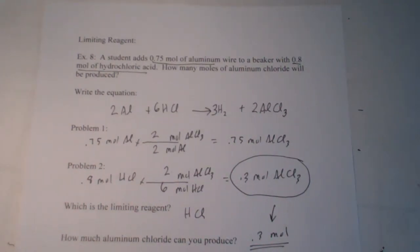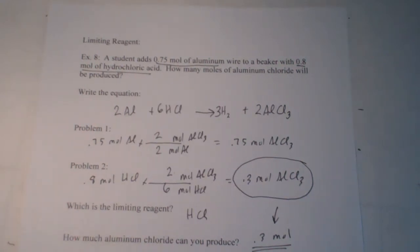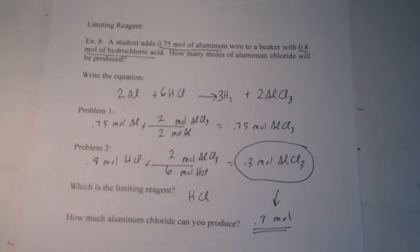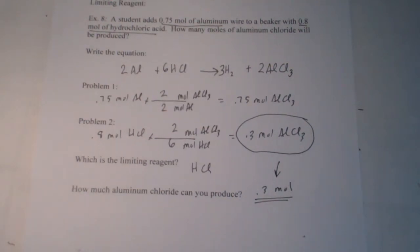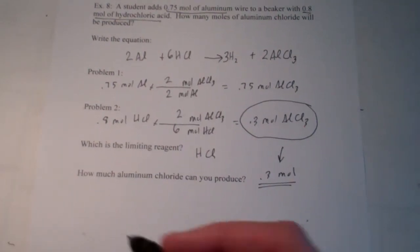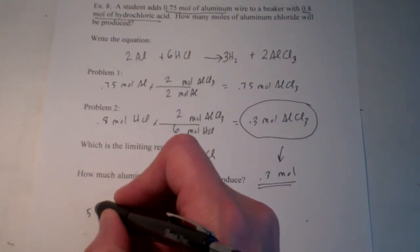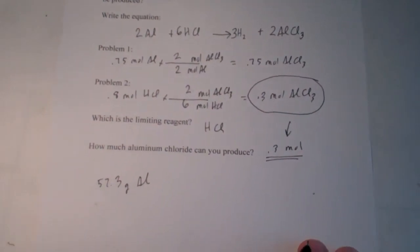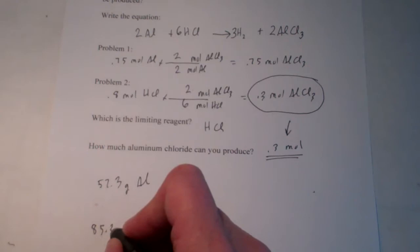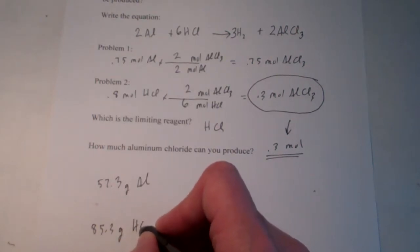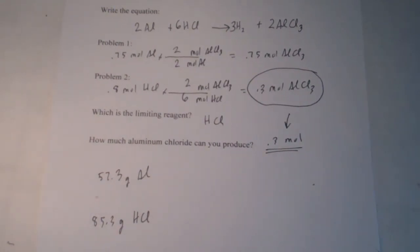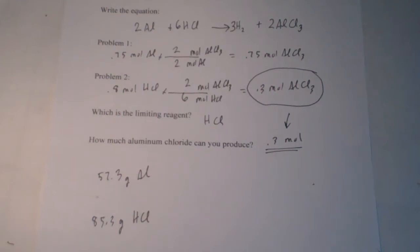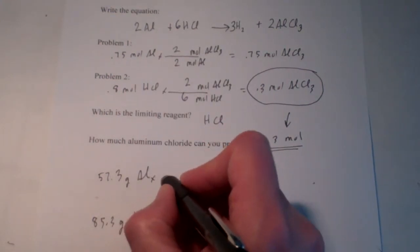This next problem is not in your notes — we're going to make it a little more interesting. We're going to use the same reaction, but instead of using moles of each reagent, let's use grams. In my stock room I have 57.3 grams of aluminum and 85.3 grams of hydrochloric acid. How much aluminum chloride could I make with these two reactants? One of them is going to limit the amount of product I can produce, so let's do our stoichiometry.